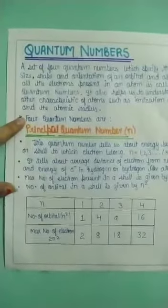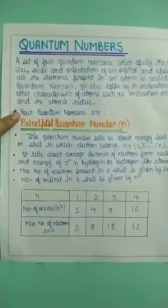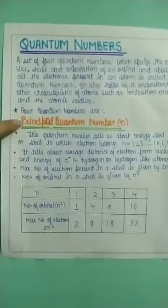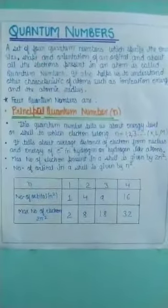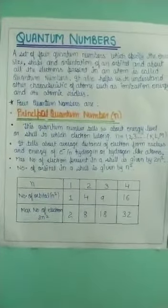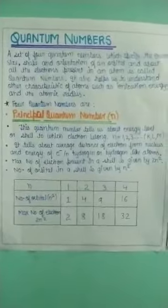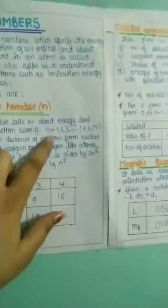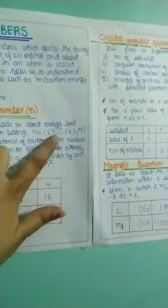So we have four quantum numbers. First is the principal quantum number, which we denote by n. This quantum number tells us about the energy level and shell where electrons are present. The value of n can be 1, 2, 3 — corresponding to the 1st, 2nd shell, or K, L, M shells. It tells us about the average distance of the electron from the nucleus.